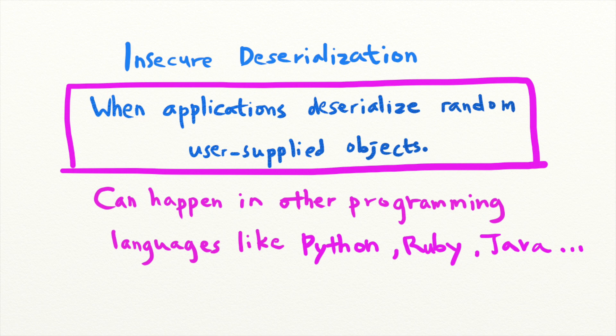And that's it for today's security lesson. Next time, we'll talk about how to prevent insecure deserialization vulnerabilities.